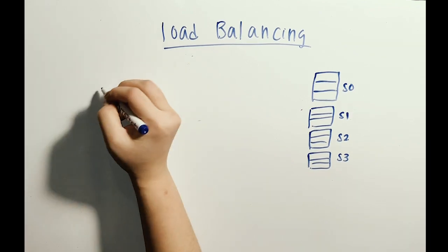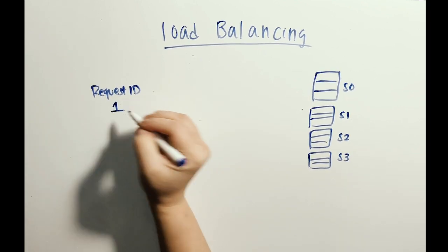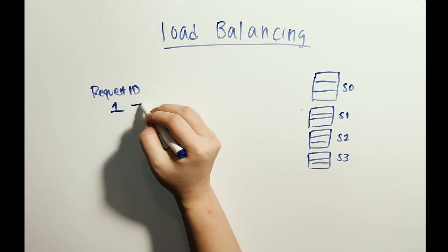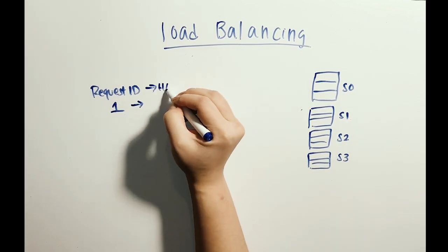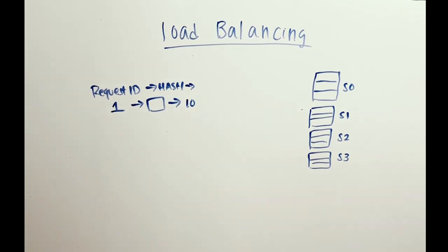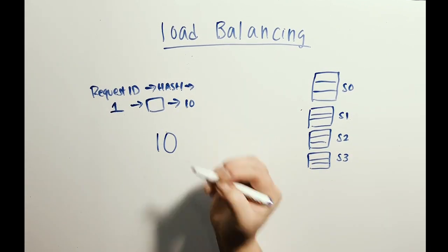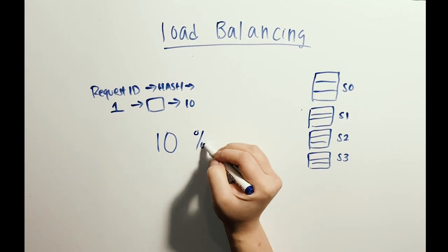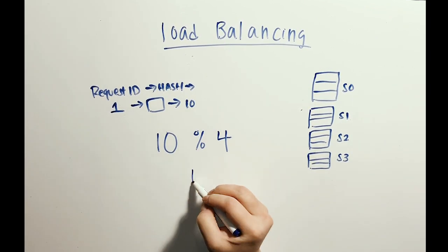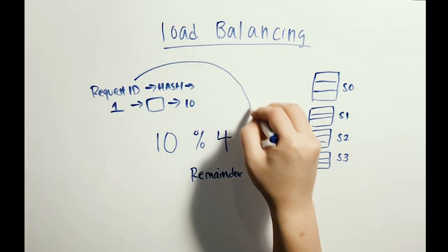The traditional way of solving this is through the modulus operator. When a request comes in, each request is randomly assigned a request ID. We then take the request ID and hash it. Request number 1 is hashed to be number 10. We can then use this hash, which is a string of numbers, find the remainder divided by the number of servers, and the remainder is 2. Therefore, request 1 will go to server 2.